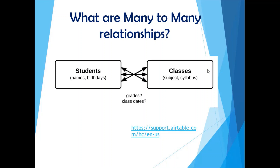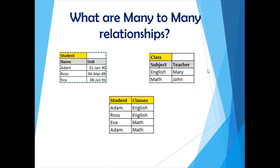Let's understand what a many-to-many relationship is with an example. We have two entities: students and classes — two database tables. A student can take multiple classes; by classes we're referencing subjects, so a student might take English, Math, Science, and so on. A class can also be attended by multiple students, so there are multiple records in each entity related to multiple records in the other entity.